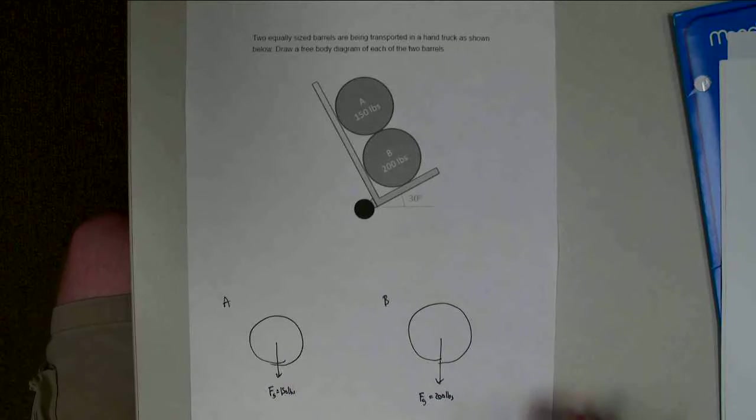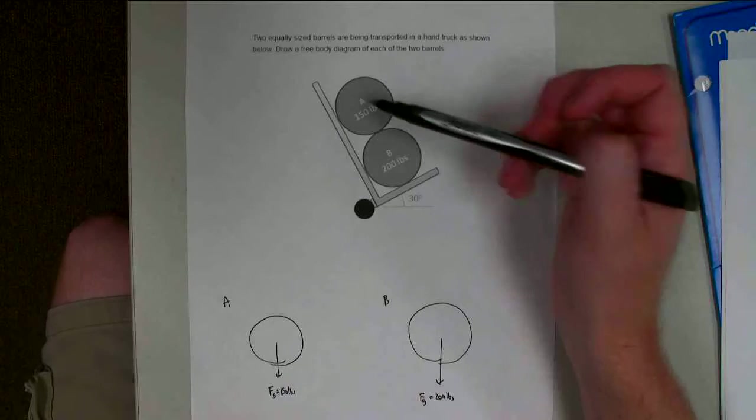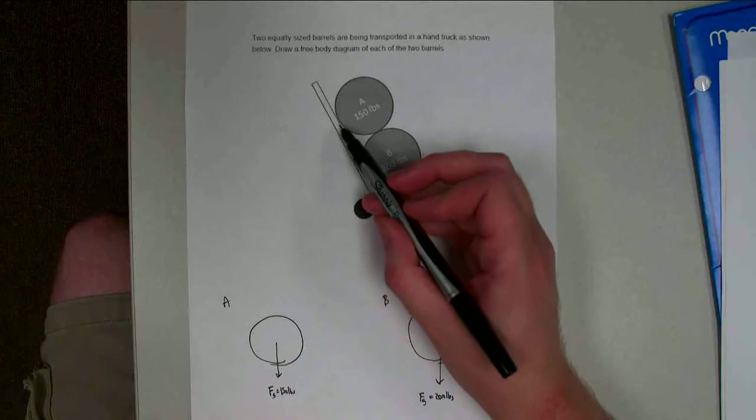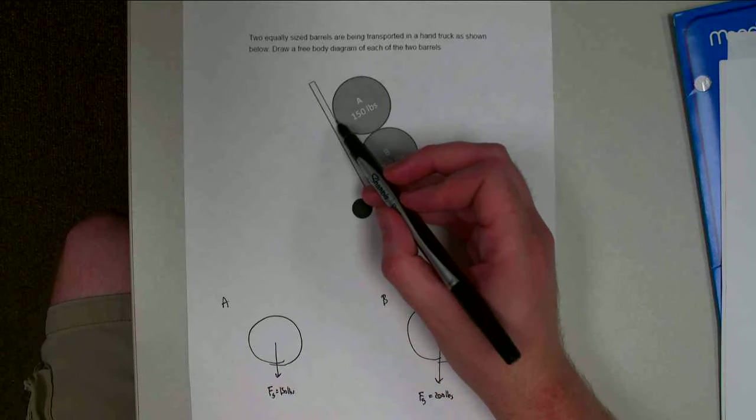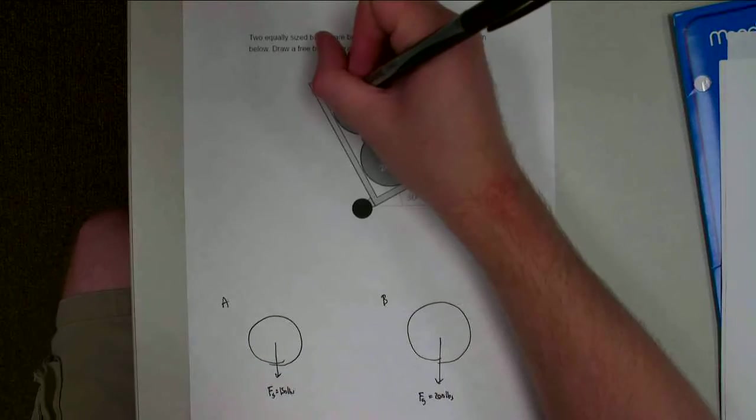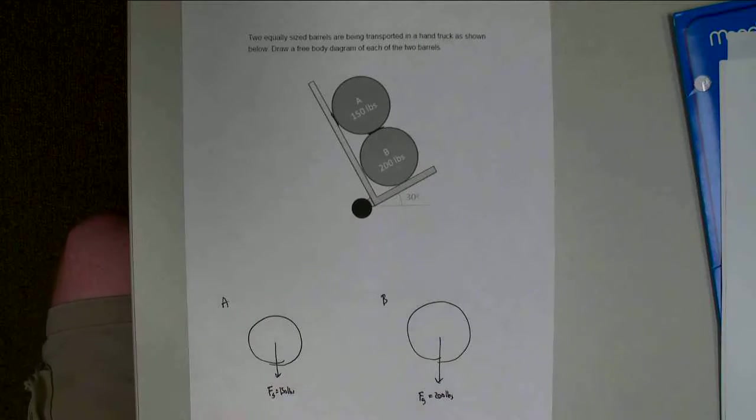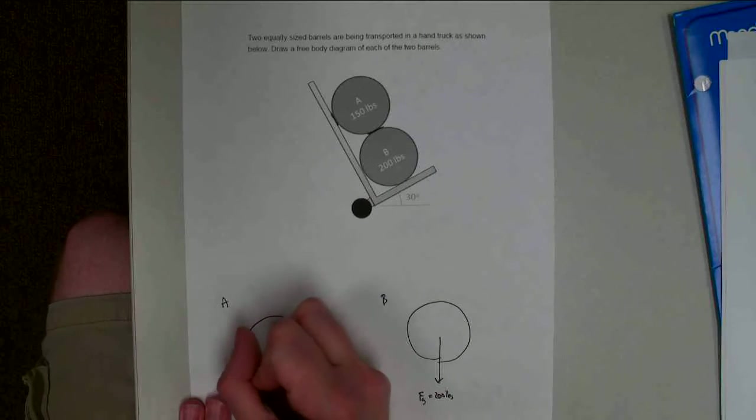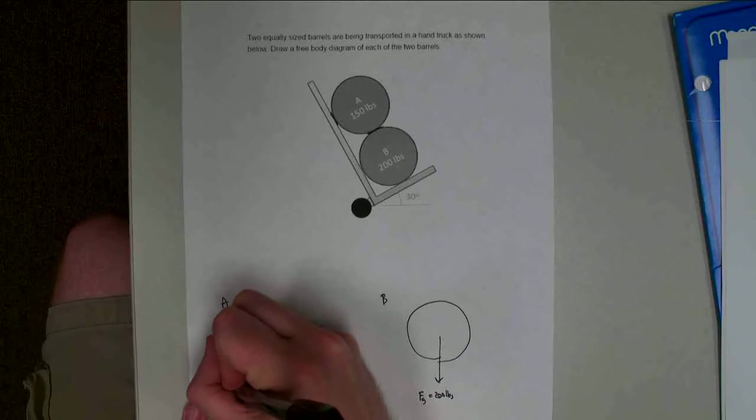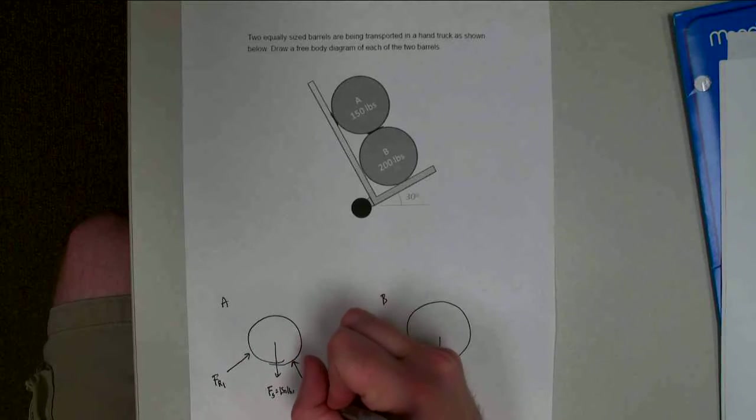All right, and then we need to start thinking about the other forces that are acting on these barrels. So each of the barrels is in contact with multiple surfaces. So over here, barrel A has a contact point between the back of the hand truck and its side, and between the base of A and the top of B over here. And so these are going to be perpendicular to those surfaces in contact. So first the side of the barrel is going to be kind of acting like this, and I'm going to call that one FR1, and on the base, I'm going to have FR2.